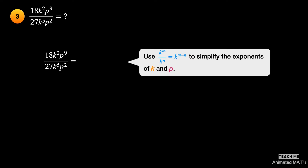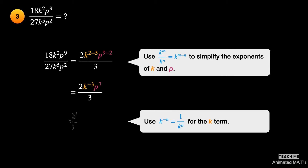Simplify 18 over 27 by canceling nine, giving us two over three. Use the sixth property for the k and p terms. The exponent of k is 2 minus 5, or negative 3. The exponent of p is 9 minus 2, or 7. Use the fourth property for the k term. The final simplified form is 2p to the seventh power over 3k to the third power.